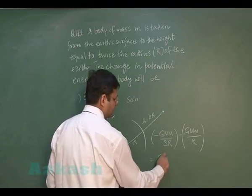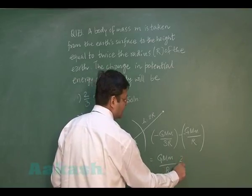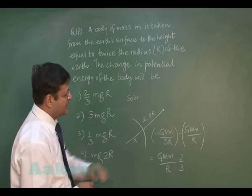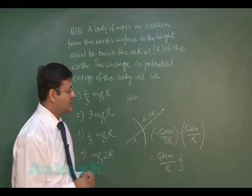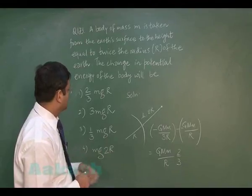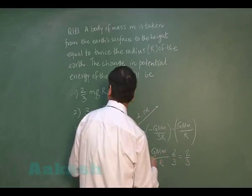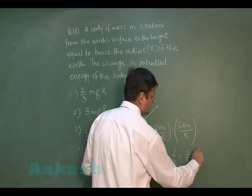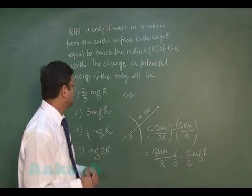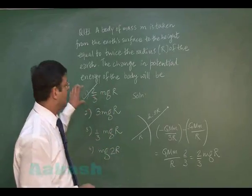That makes it GMm/R multiplied by a factor of 2/3, because 1 minus 1/3 equals 2/3. If you replace GMm/R using g = GM/R², it becomes 2/3 mgR. This is the difference in potential energy, and the most appropriate option is 2/3 mgR for question 173.